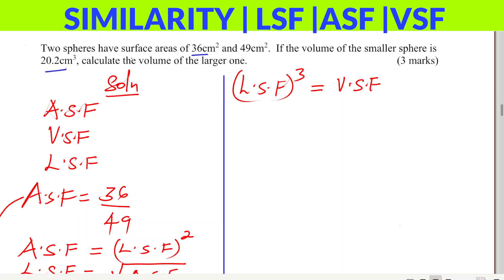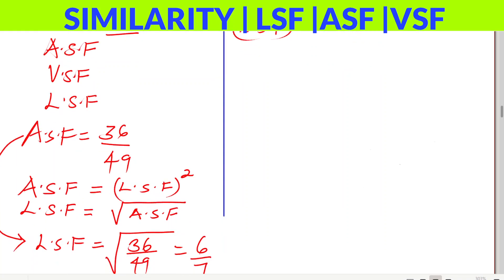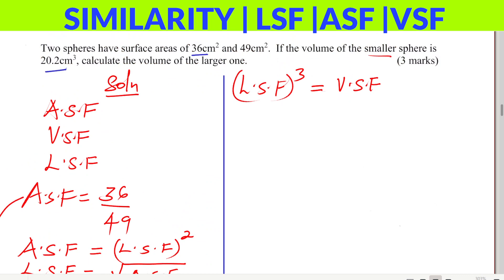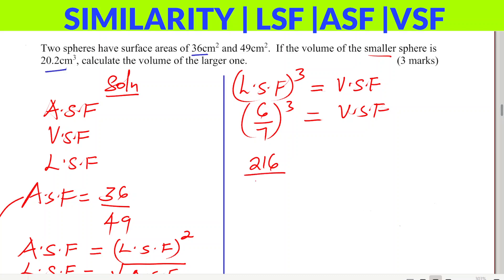We need this because in this question we're given the volume of the smaller sphere and need to find the volume of the larger one. We already have the linear scale factor of 6/7, so (6/7)³ = volume scale factor. 6³ = 216 and 7³ = 343, so the volume scale factor is 216/343.